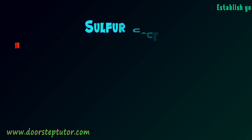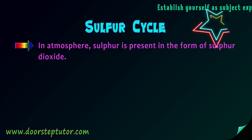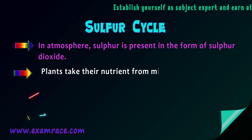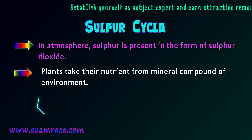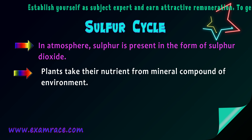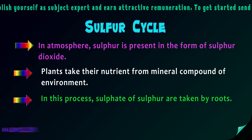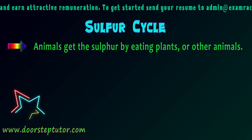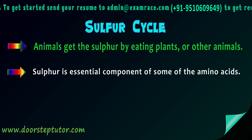In the atmosphere, sulfur is present in the form of sulfur dioxide (SO2), which is a gas. Plants take their nutrients from mineral compounds of the environment. You can see in the diagram that the mineral moves from the atmosphere to the biosphere. Sulfates of sulfur are also taken up by plant roots. Animals get sulfur by eating plants or by eating other animals. Sulfur is also an essential component of some amino acids.